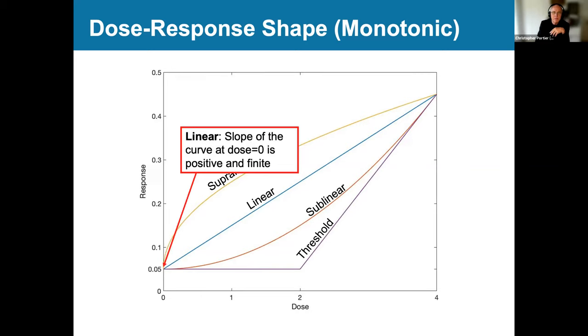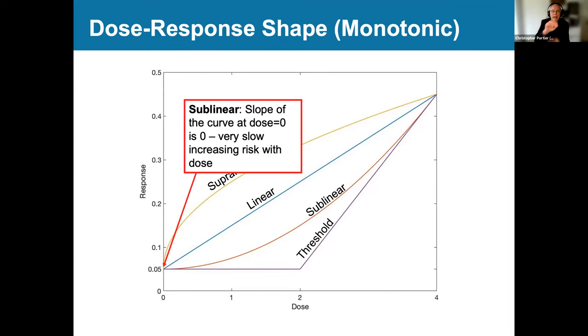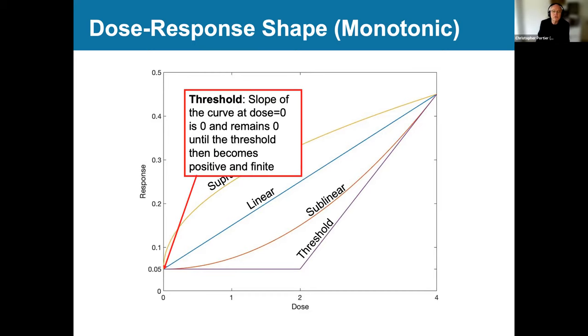Sublinear starts with a slope of zero, dose zero. That means nothing's really happening at very low doses. And then it slowly climbs until it starts climbing rapidly. And then it climbs very rapidly. And finally, there's the threshold dose response. And this one's unique in that it says there's this entire range where nothing happens. And then at some point, something begins to happen and you start to see effects occurring.